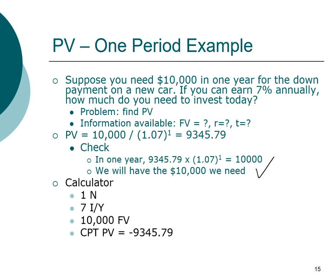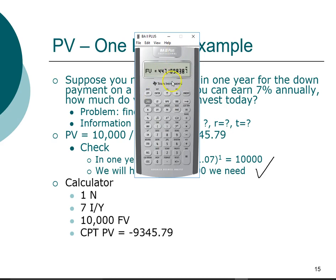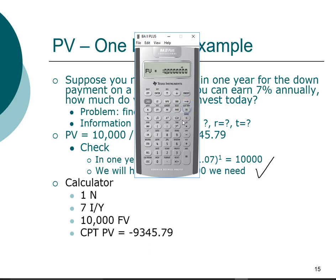We can also use a financial calculator to solve this problem. To find the present value, first clear the register and clear the TVM using Second Function → Clear TVM. Then enter: N = 1, I/Y = 7, FV = 10,000, and compute PV. The calculator shows the present value as negative $9,345.79, reflecting that we are investing that amount today — an outflow — to receive $10,000 after one year.